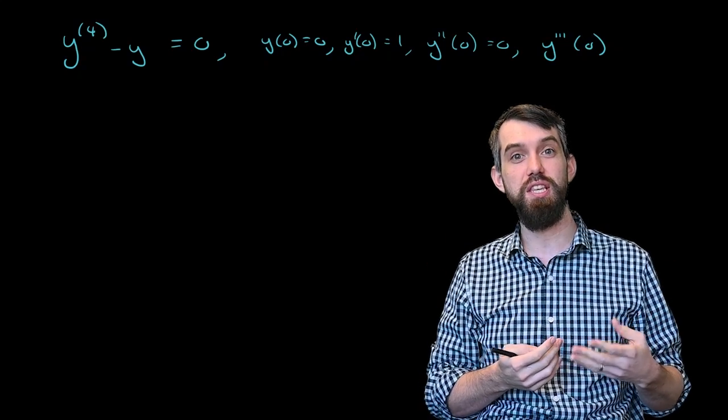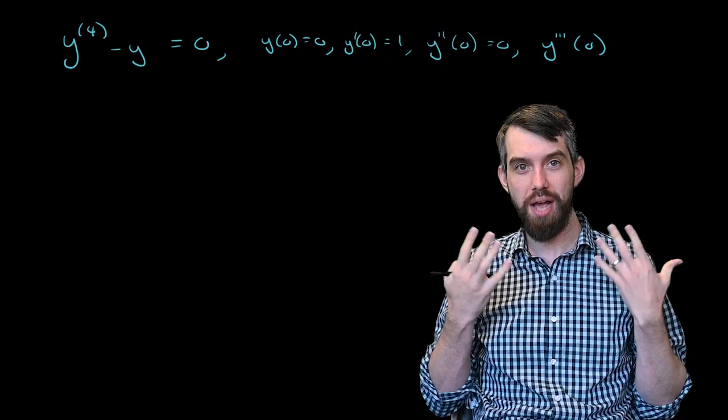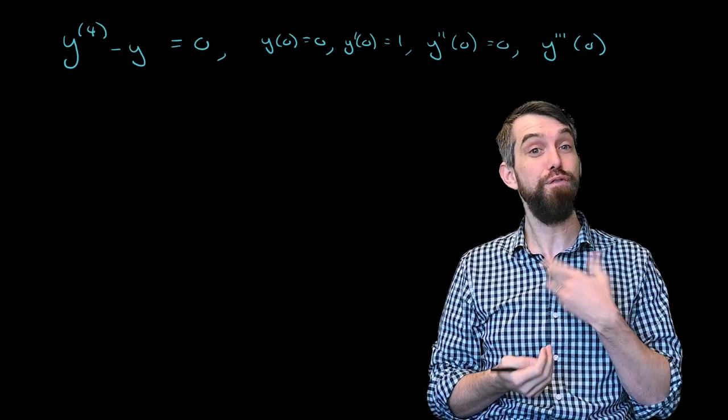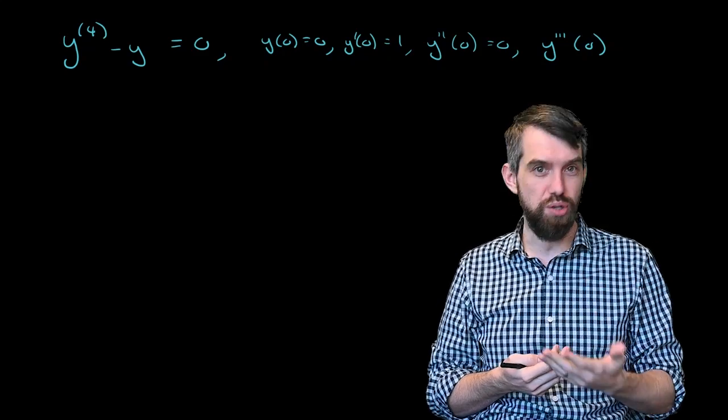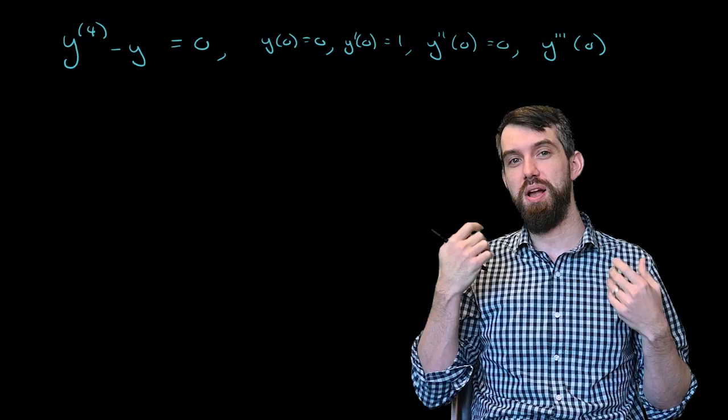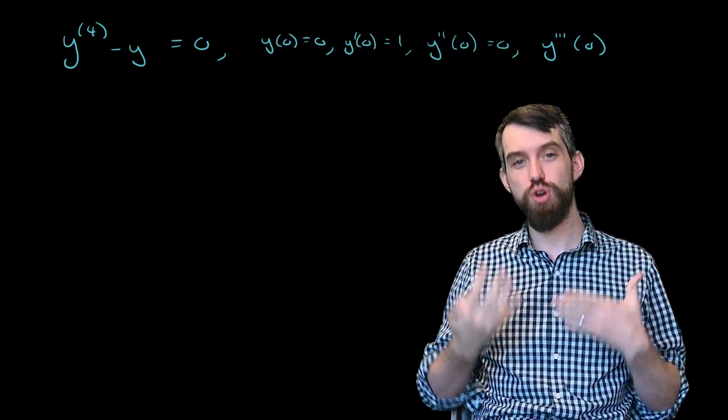This equation is that the fourth derivative of y minus y is equal to zero, and then I have four different initial conditions: y of zero is zero, y prime of zero is one, y double prime of zero is zero, and y triple prime of zero is zero.